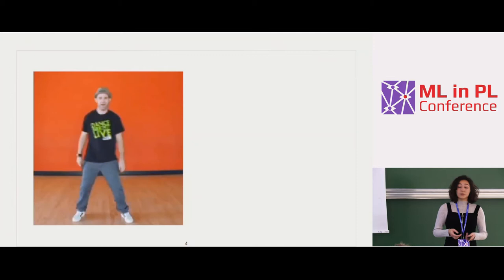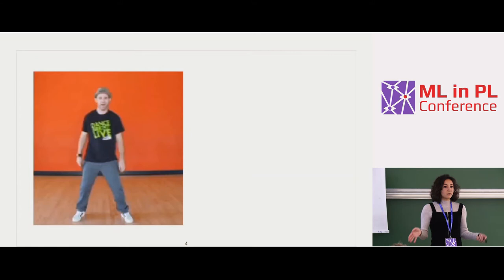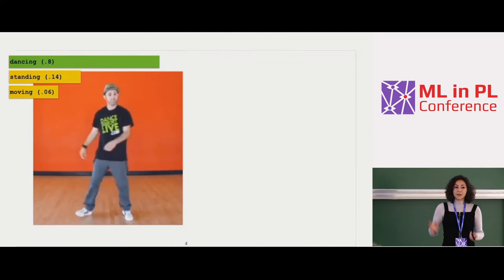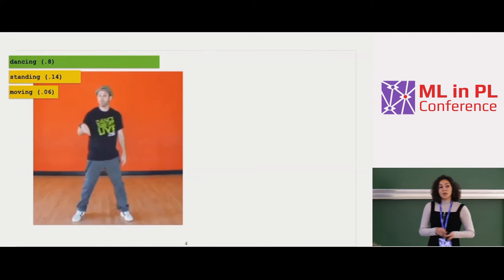In computer vision this has been done in two main directions. One is looking at human dynamics in videos — labeling something like a YouTube video into an action class, like dancing or standing. We call this action recognition.